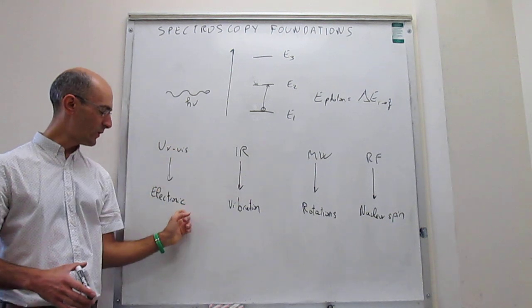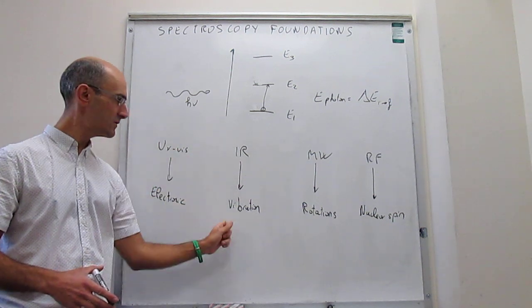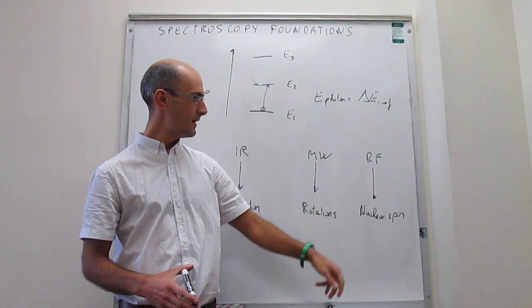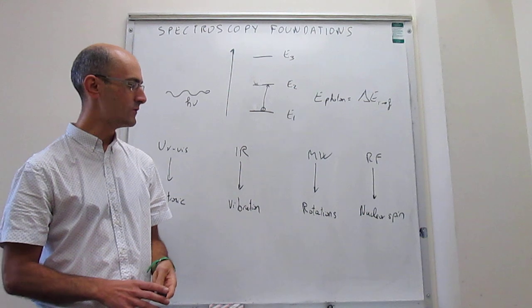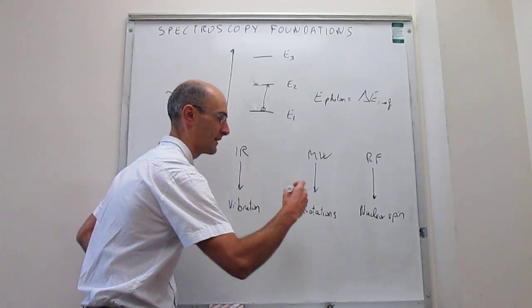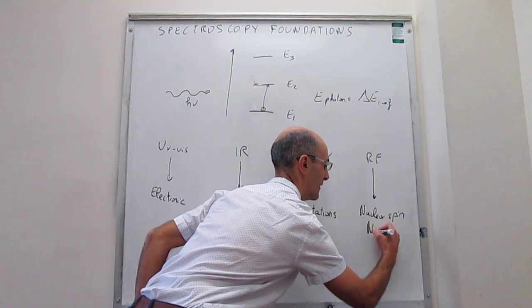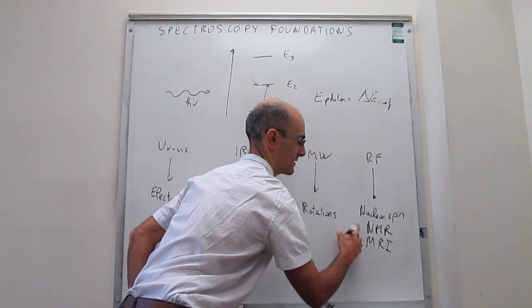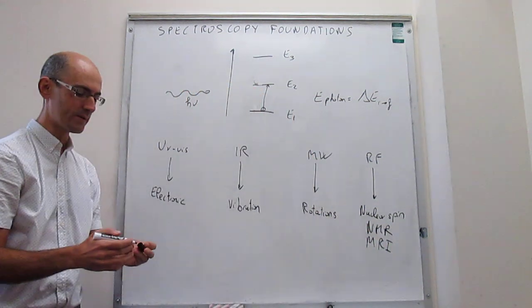Again, UV-Vis, you would actually be promoting electronic transitions, infrared vibrational transitions, microwave rotations, and then with radiofrequency photons, you will be promoting nuclear spin transitions. The techniques that we get out of this are NMR, nuclear magnetic resonance, and of course MRI, which is just an application of nuclear magnetic resonance.